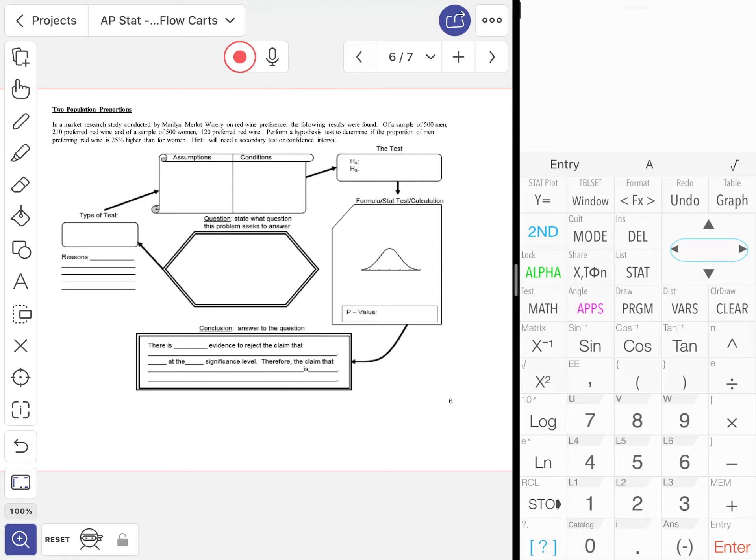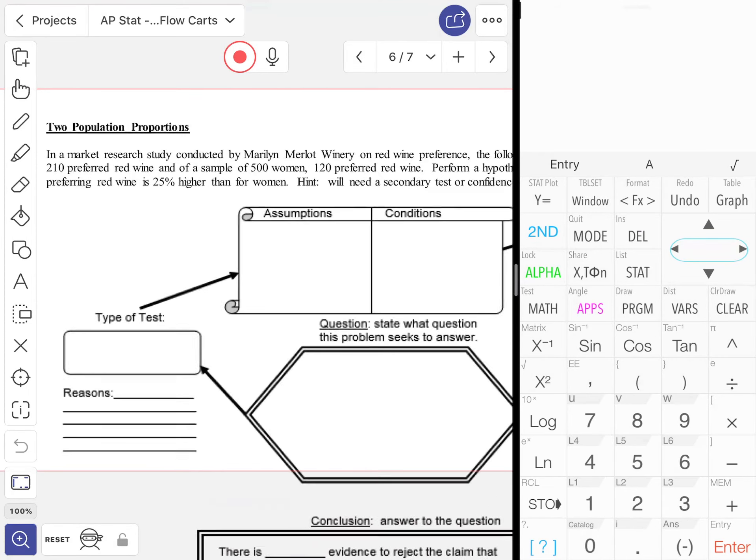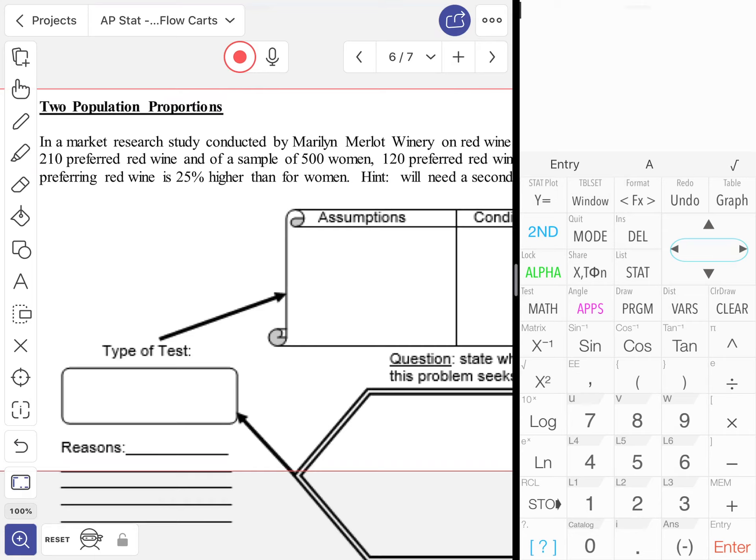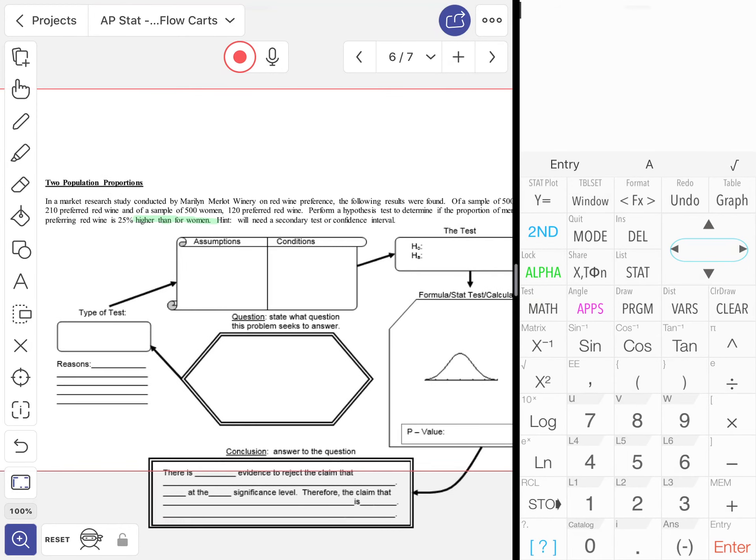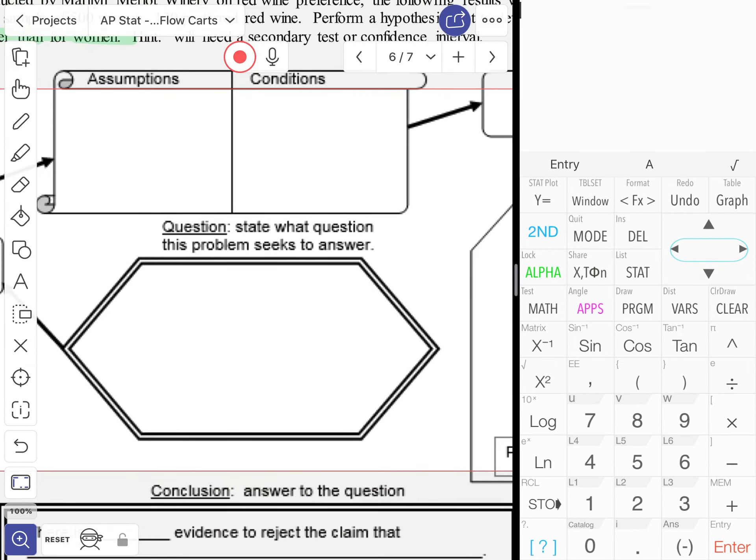Perform a hypothesis test to determine if the proportion of men preferring red wine is 25% higher than for women. The hint here is we'll need a secondary test or a confidence interval. Let's focus on the higher part first, and there's a little added twist to this problem, but it's nothing we can't handle. We're looking at whether or not the population proportion of men preferring red wine is higher than that of women.